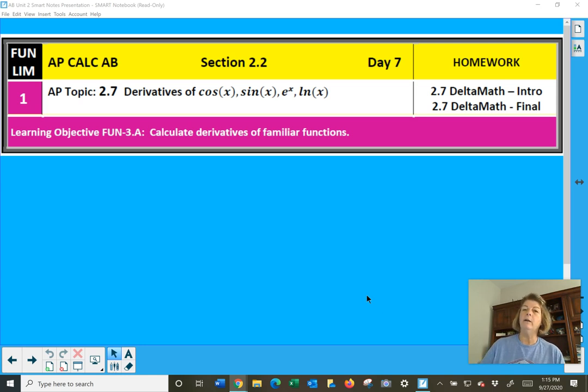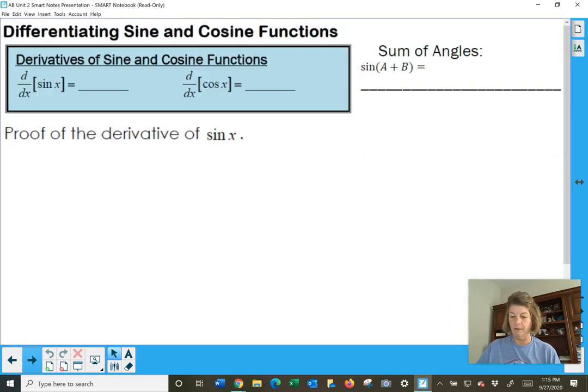Section 2.7, we are looking at the derivatives of sine, cosine, natural log, and e today. So we're going to pick up four rules that you'll want to memorize as we go through it. They are not difficult ones to memorize.